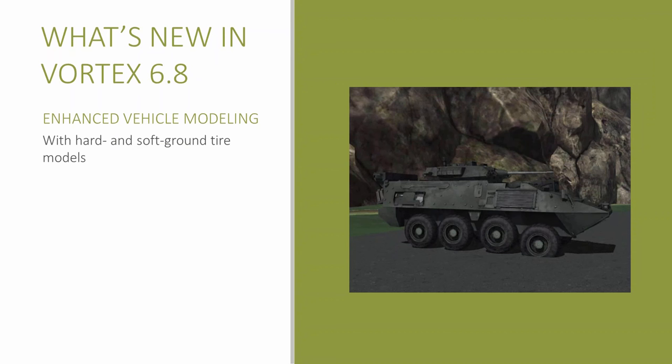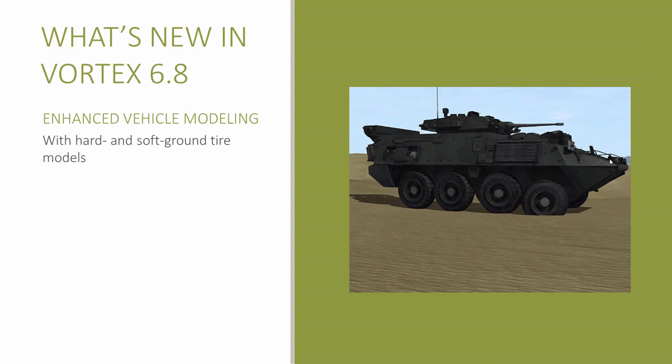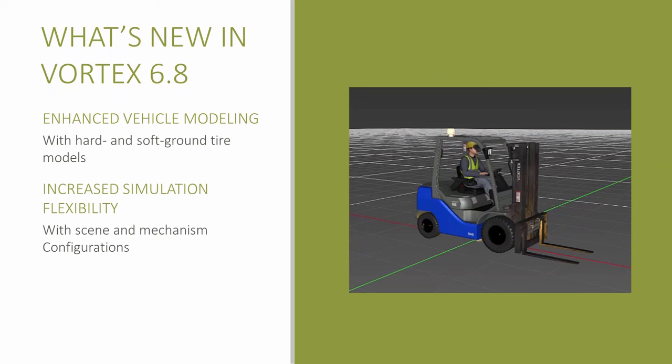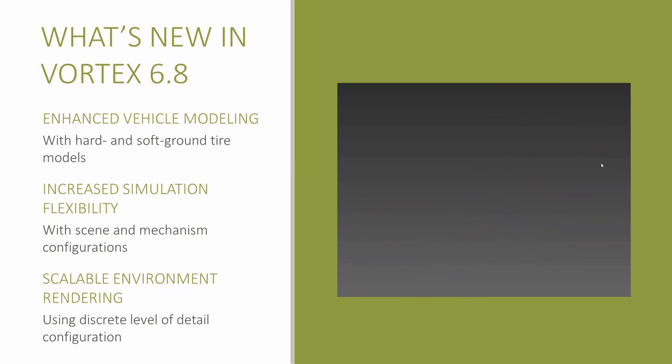This brings us to Vortex 6.8, which brings improvements to vehicle modeling in the form of advanced soft-ground tire models providing enhanced behavior on different ground types. Vortex 6.8 also introduces scene and mechanism configurations, allowing you to more efficiently create variations of the same simulation scenes and mechanisms, saving time and building more flexible, adaptable scenarios. Finally, Vortex 6.8 introduces a new level of detail configuration option that makes it easier to create large environments that scale efficiently in terms of visual rendering.